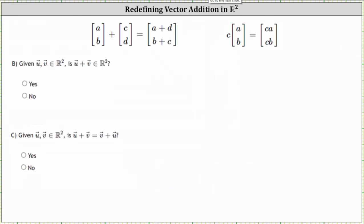For part b, given vectors u and v, is the sum of vectors u and v in R²? So vector u has components u sub one, u sub two, plus vector v, which has components v sub one and v sub two. And now again, we apply the new definition of vector addition, where the first entry is u sub one plus v sub two, and the second entry is u sub two plus v sub one. The sum is a vector with two components, and therefore the sum is in R². The answer is yes, the sum is in R².